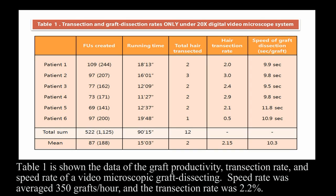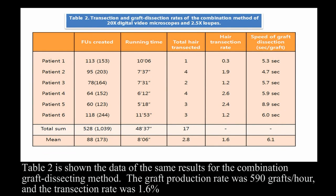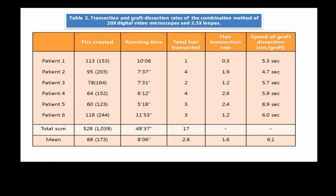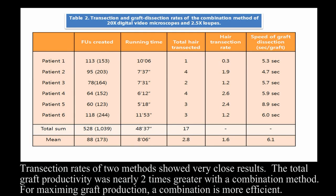Table 1 shows the data of graft productivity, transaction rate, and speed for video microscopic graft dissecting. Speed was an average of 350 grafts per hour and the transaction rate was 2.2%. Table 2 shows the same data for the combination graft dissecting method. The graft production rate was 590 grafts per hour and the transaction rate was 1.6%. The transaction rates of the two methods showed very close results, but total graft productivity was nearly two times greater with the combination method. For maximizing graft production, the combination method is more efficient.